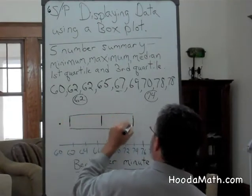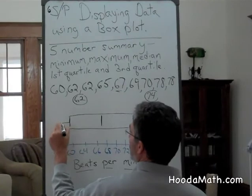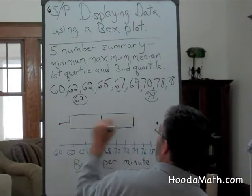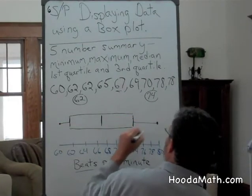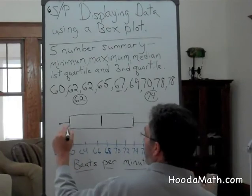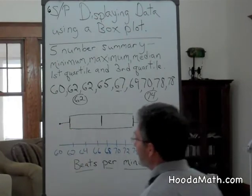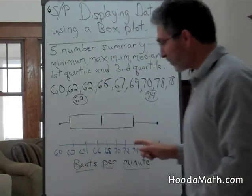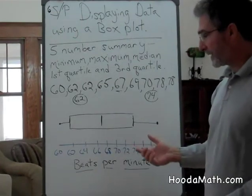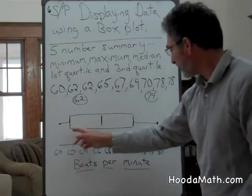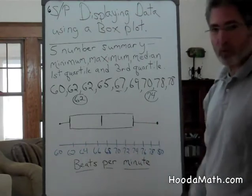This is our box. These lines to the right and left are sometimes referred to as the whiskers. This is a box and whiskers plot of this data. It says most of the data is between 62 and 74.